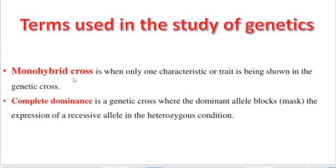Let us now look at monohybrid cross. A monohybrid cross is when only one characteristic or trait is being shown in the genetic cross. To understand monohybrid cross, we use genetic diagrams, which can be presented using the Punnett diagram, the pedigree diagram, or the common genetic diagram. Apart from monohybrid cross, we also have complete dominance — a genetic cross where the dominant allele blocks the expression of a recessive allele in the heterozygous condition.